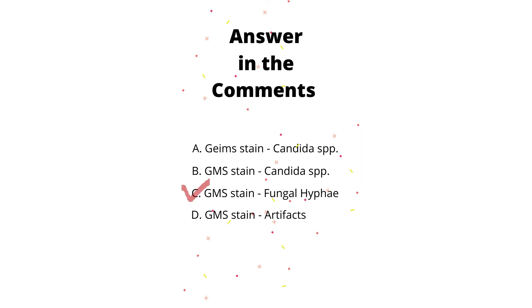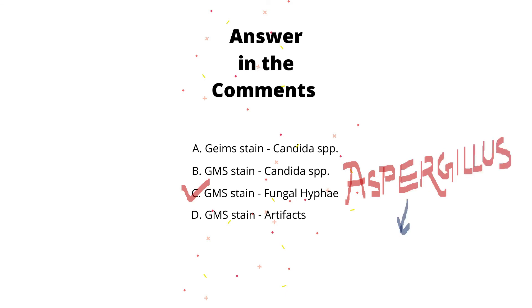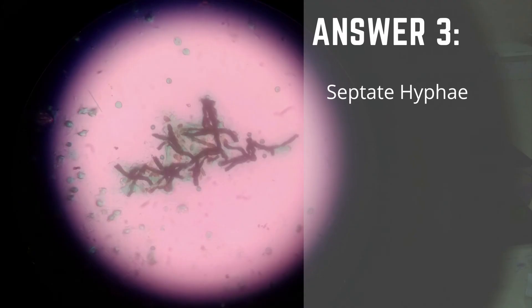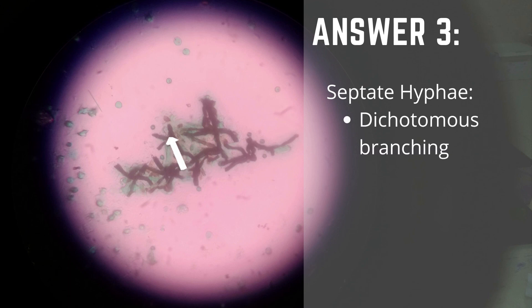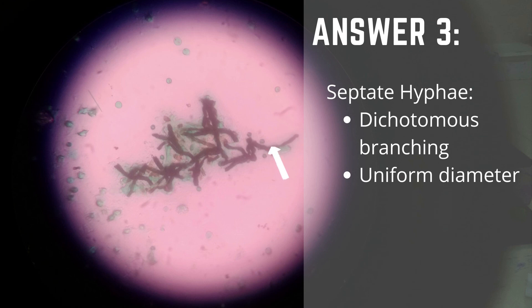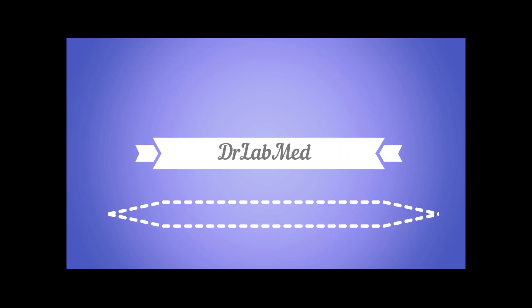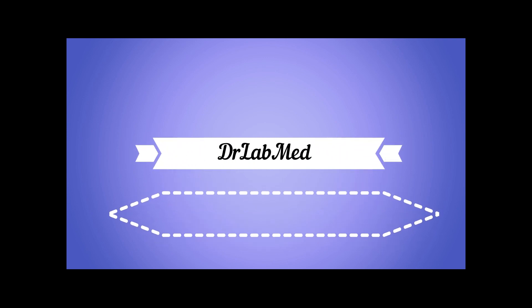Our final answer for case 3 is option C — this hyphae is suggestive of Aspergillus, which can be confirmed by fungal culture, most preferably on SDA. In summary, septate hyphae with dichotomous branching and uniform diameter are suggestive of Aspergillus species. Thank you guys — please like, share, and subscribe to this channel.